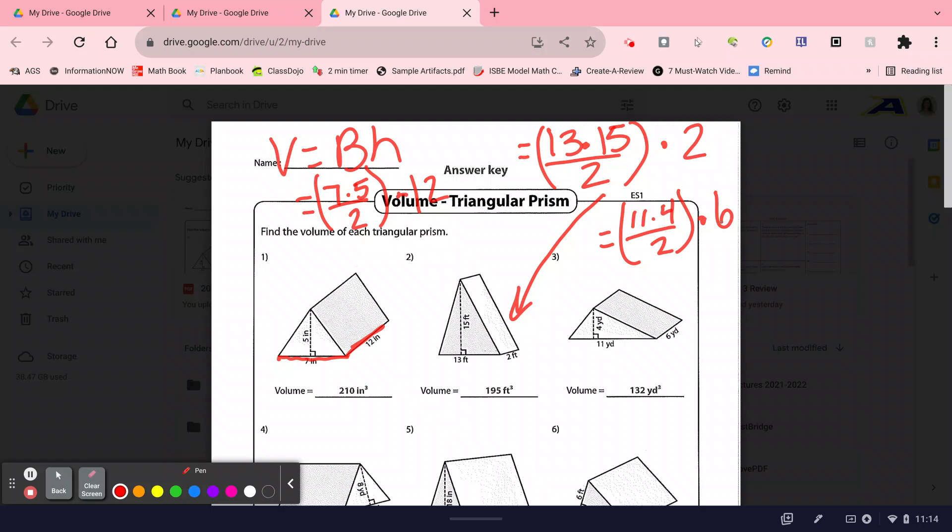For number two, you would have had base of the triangle was 13 times height of the triangle was 15 divided by 2 because it's a triangle, times the height of the prism, which is 2. What we are going to do is we're going to have a two-problem quiz tomorrow.